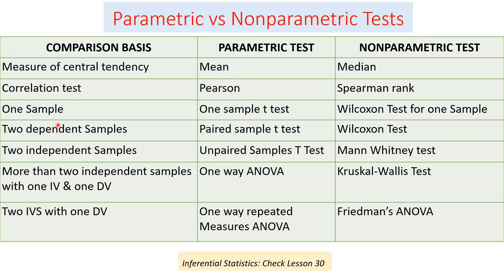For a one-sample test, the one-sample t-test is used in parametric tests, and the Wilcoxon test for one sample is the non-parametric counterpart. For two dependent samples, the paired sample t-test is used parametrically, while the Wilcoxon test is used non-parametrically. For two independent samples, the unpaired sample t-test is used parametrically, and the Mann-Whitney test is the non-parametric equivalent.